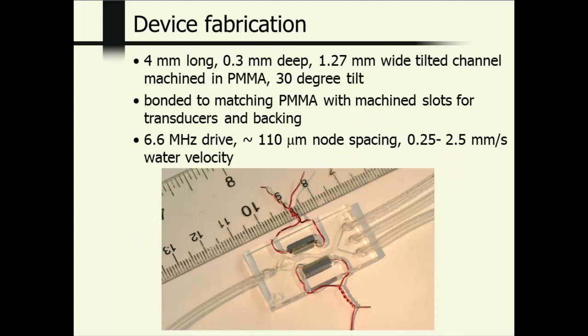The device fabrication that we will be talking about has a 4mm long channel. It is 0.3mm deep and 1.27mm wide. It is tilted at 30 degrees with respect to the transducers. It is bonded to a matching piece of plexiglass with machine slots for the transducers and the backing. And both of these pieces of plexiglass are fabricated by using a computer-controlled milling machine.